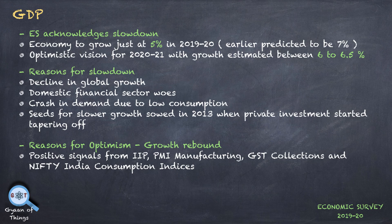The economy has slowed down in 2019-20. The growth estimate has been revised down from 7% to 5%. However, for the next year there is a lot of optimism, with a growth estimate of 6 to 6.5%. One reason for the slowdown is the decline in the world economy.